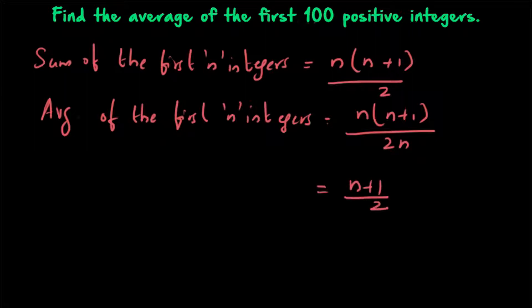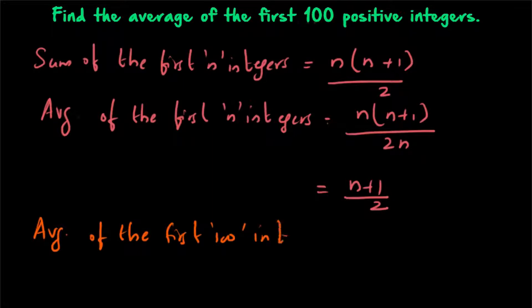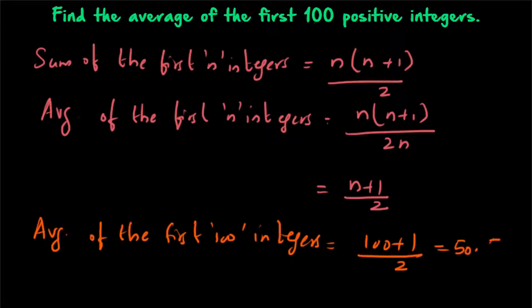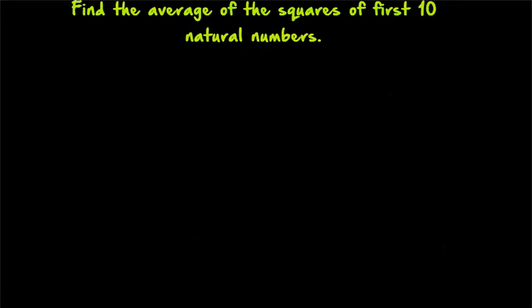So (n+1)/2 is the formula for the average of the first n integers. Our question asks us to find the average of the first 100 positive integers. So it will be equal to 100 plus 1 divided by 2, where n equals 100. So 101 divided by 2, which is equal to 50.5.